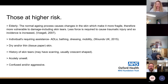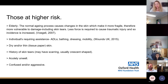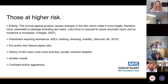Those at higher risk are people you'll come across very often. The elderly are a big risk factor because the normal ageing process causes changes in the skin, making it more fragile, vulnerable, and susceptible to damage — less force is required to cause a skin tear. Those requiring increased assistance with activities of daily living, such as bathing, dressing, assistance with mobility, or use of hoists, are also at increased risk.